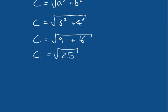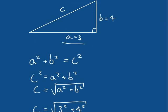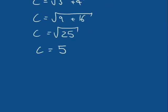We saw earlier that we can get two values for the square root of a positive number. In this case, the square root of 25 is either positive 5 or minus 5. However, we're dealing with the length of an edge of a triangle, which we know must be positive. When we're measuring the length of something, we always use a positive value. Thus, we're only ever going to take the positive value from this square root. So Pythagoras' theorem informs us the hypotenuse of a triangle where one edge is 3 and the other is 4 has a length of 5.